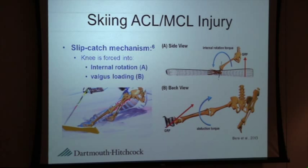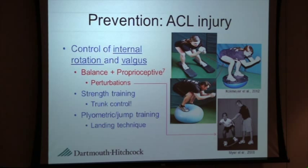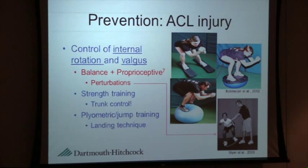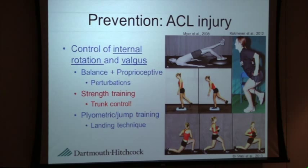With those risk factors identified, we want to design interventions to help lower your risk of sustaining that injury. Everything is centered around control of internal rotation and valgus loading of the knee. One of the most efficacious approaches is balance proprioceptive exercise — doing things that put you in a ski-specific position on an unbalanced surface, with perturbations through a partner, tossing a ball, or any outside force you have to adjust to. Strength training is also very important because skiing requires high levels of strength to control those forces. We also want to stress trunk control, since most of these injuries happen when you're off balance or losing control.